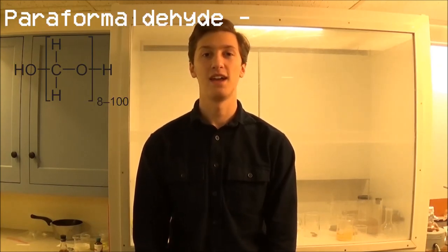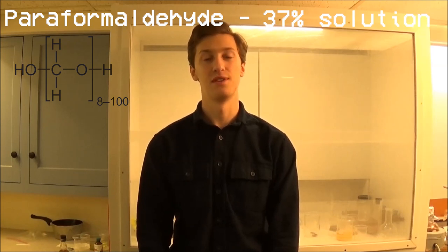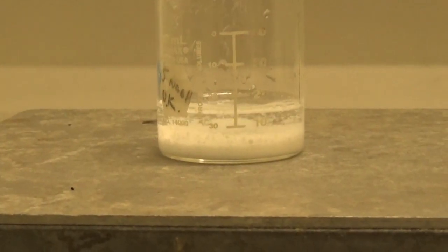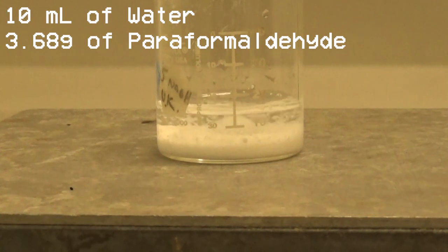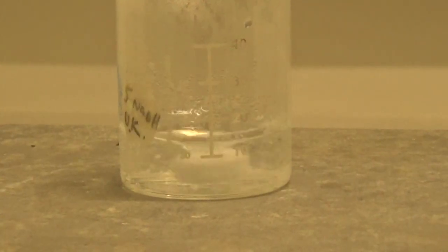My source of formaldehyde is paraformaldehyde, and the preparation I was looking at called for a 37% solution. To prepare this, I mixed together water, paraformaldehyde, and a tiny bit of potassium hydroxide, and let it stir on my hot plate with some heating until everything dissolved. After doing all these steps, I had everything that I needed to make the palladium on carbon.